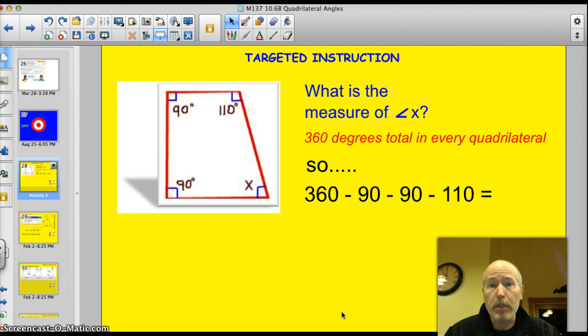And just like finding the missing angle on a triangle, you do the same thing with the quadrilateral. You take the 360 degrees, you subtract the other angles. So, 360 minus 90, minus 90, minus the 110, is going to give you 70 degrees. You pop that into a calculator. And then you can just take and stick that right in there. 70 degrees.